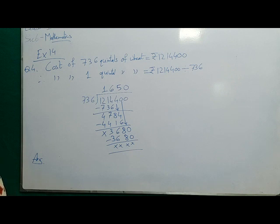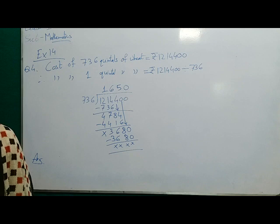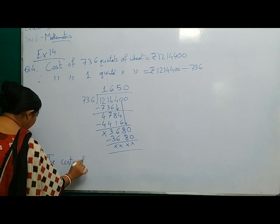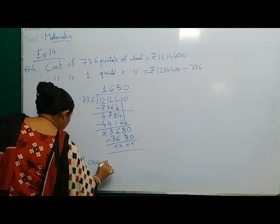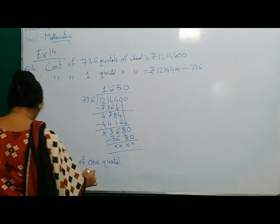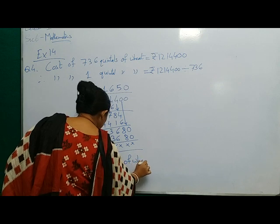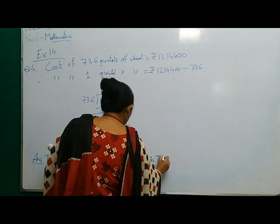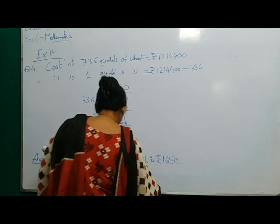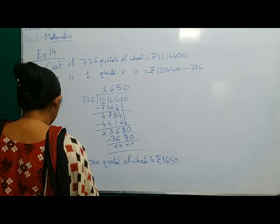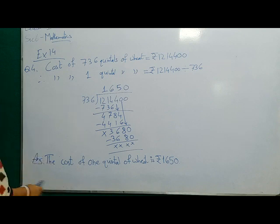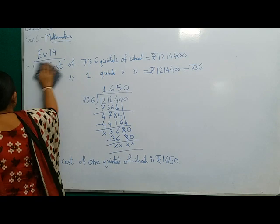Now from the question you will write the answer in statement that, find the cost of 1 quintal of wheat. So the answer will be, the cost of 1 quintal of wheat is rupees 1650. This is the answer for question number 4. Let us start the next question.